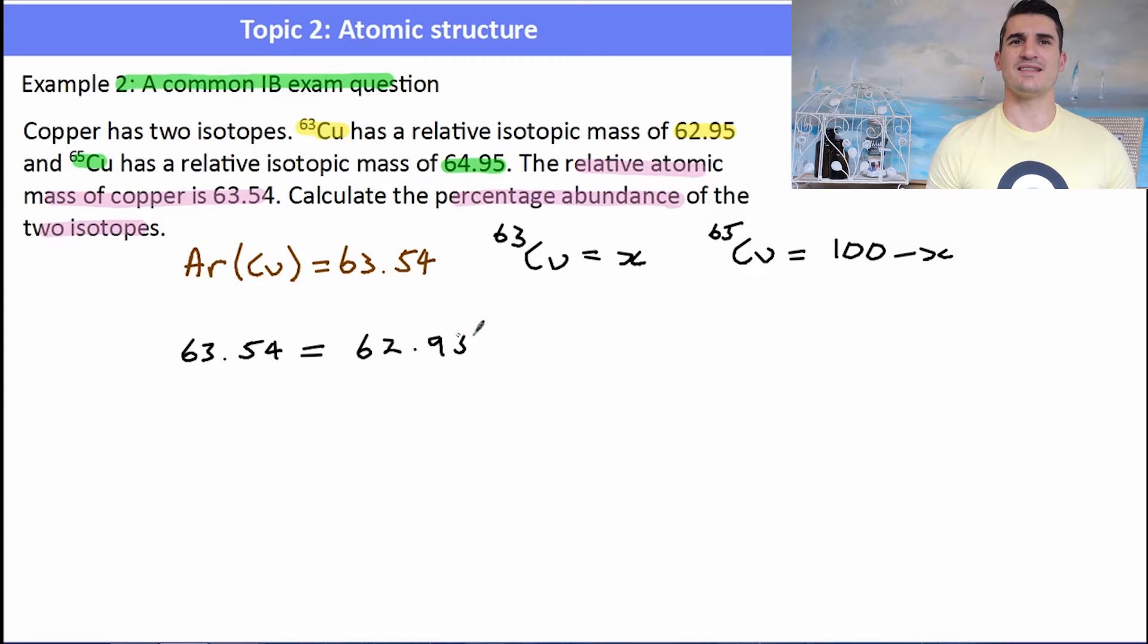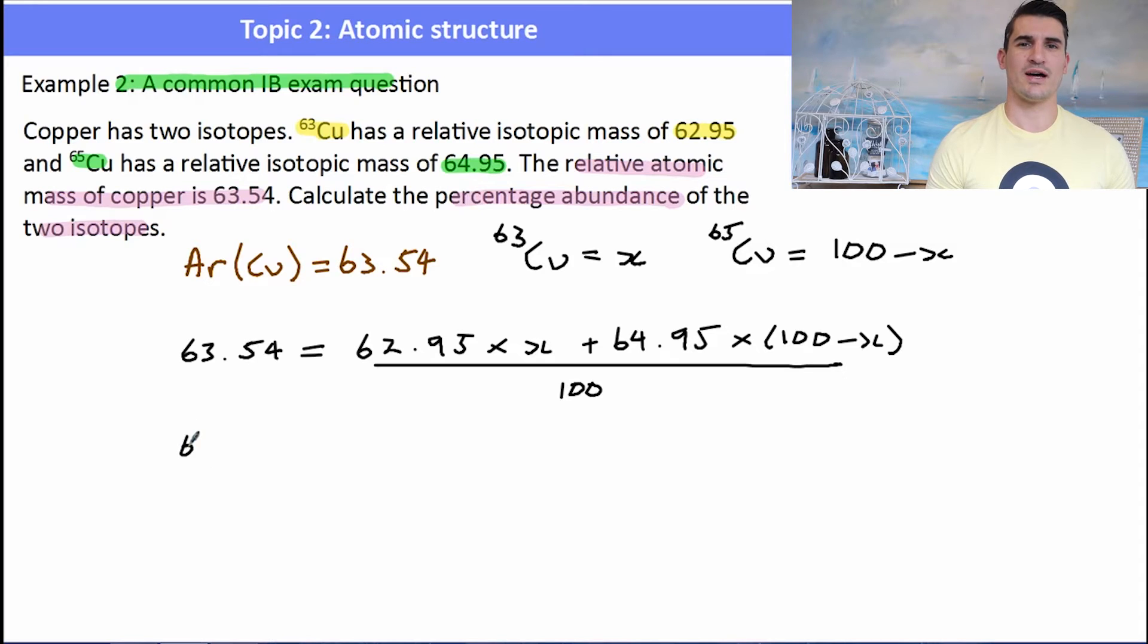So now we set this out with those variables. We have 63.54, which is our atomic mass. Our isotopic mass for the lighter one was 62.95, and then we multiply it by its percentage abundance, which is X. And then we do the exact same thing for the other one, except this time the percentage abundance is a hundred take away X. We divide that all by 100. We don't have X and Y here because we only have one equation, and we can't solve this simultaneously.